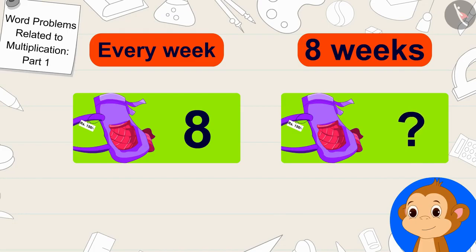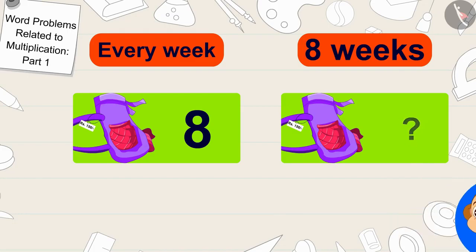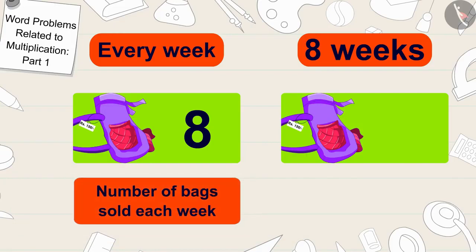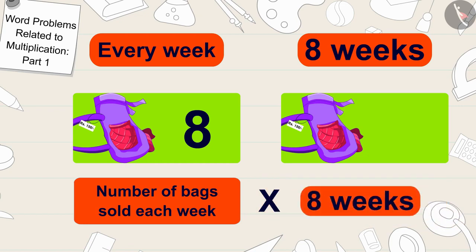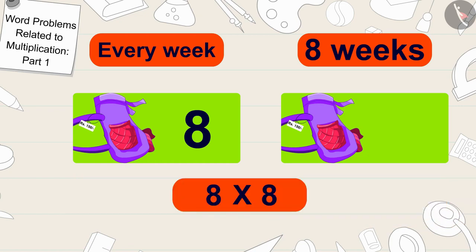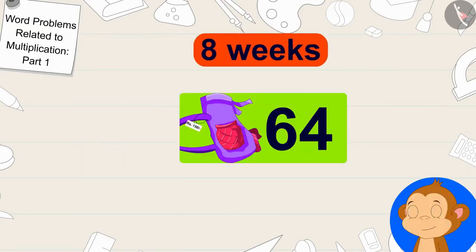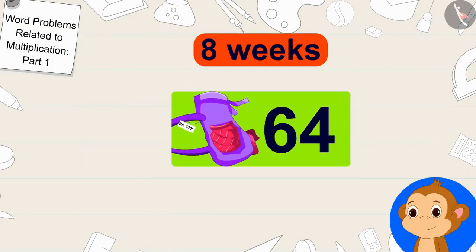What do we need to do to find this? Exactly, the number of bags sold each week has to be multiplied by the total number of weeks. 8 times 8 is 64. Babban will sell 64 bags in 8 weeks.